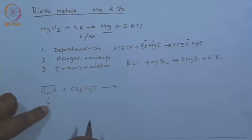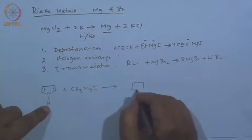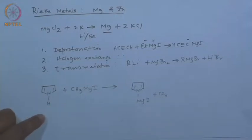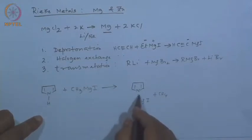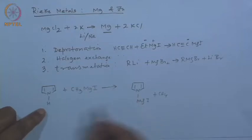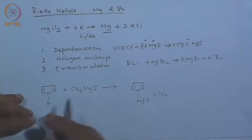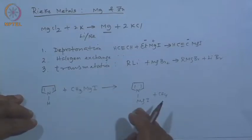Is it possible that instead of the hydrogen, you have magnesium iodide and the other thing is methane? To know whether it is feasible, you have to think about acidity — the NH acidity versus methane acidity. All of us know which one is more acidic: the pyrrole NH hydrogen is more acidic. So the corresponding magnesium compound resulting from this reaction is perfectly all right.